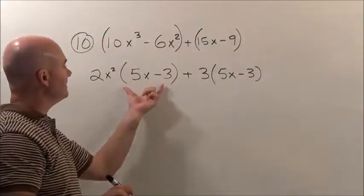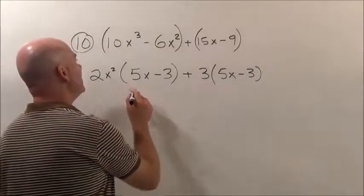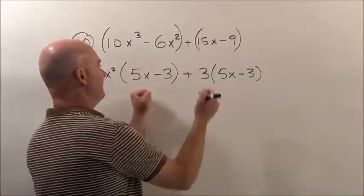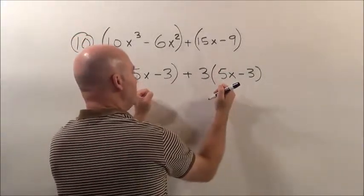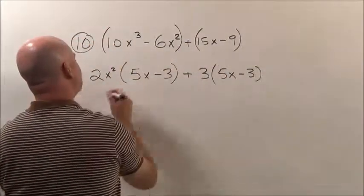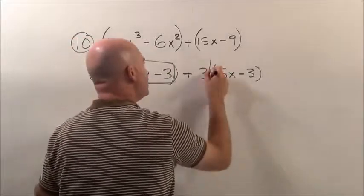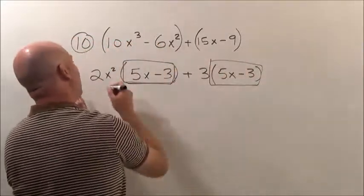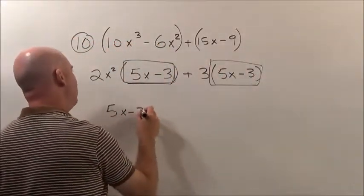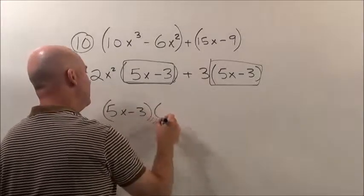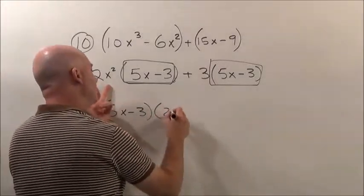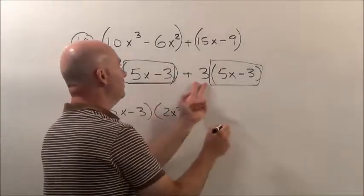Notice now this has a 5x minus 3, this has a 5x minus 3. And it's just two terms here. You have this plus this. So we can factor out this 5x minus 3. This guy right here and this guy right here can be brought out. So they're brought out and then they're left behind with a 2x² plus 3.